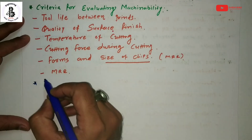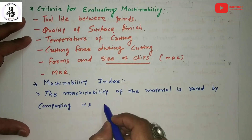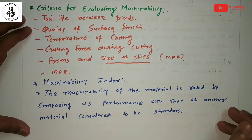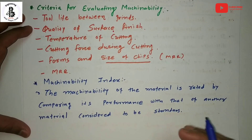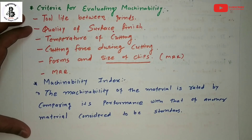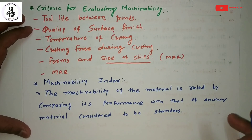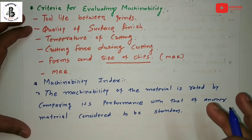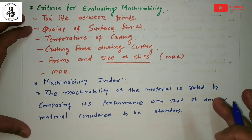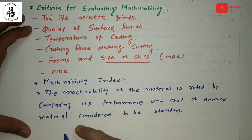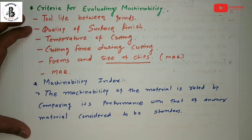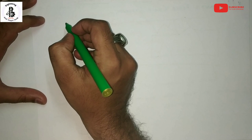The next topic is the machinability index. The machinability of a material is rated by comparing its performance with that of another material considered to be a standard. Each workpiece material is compared with the standard material, and that comparison yields the machinability index.